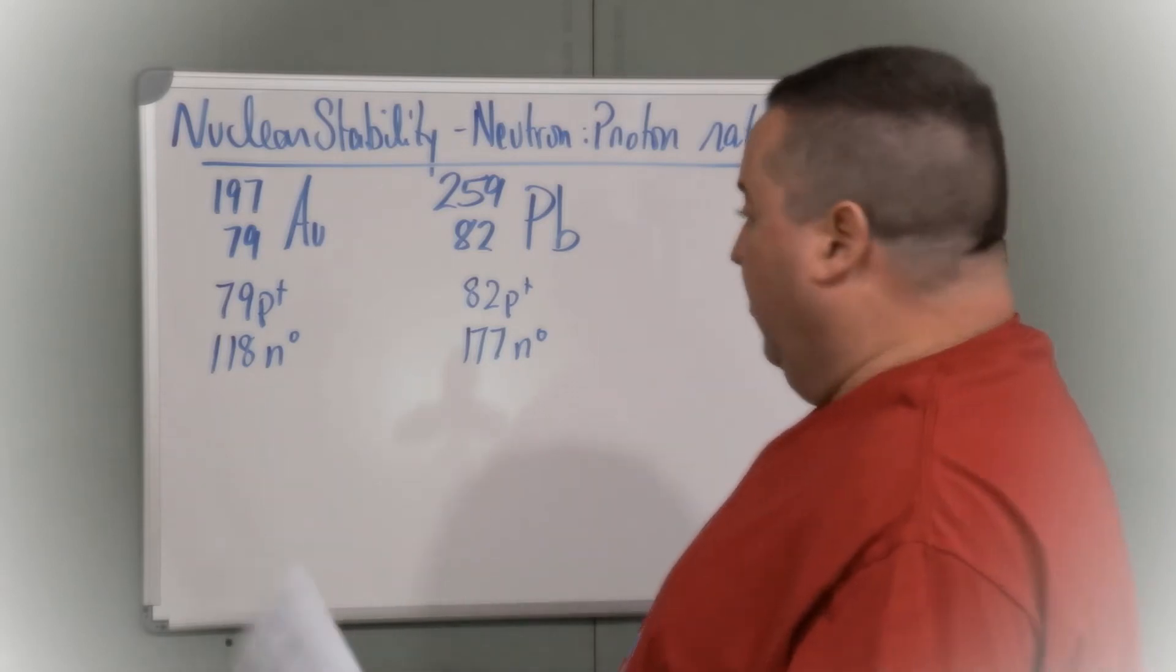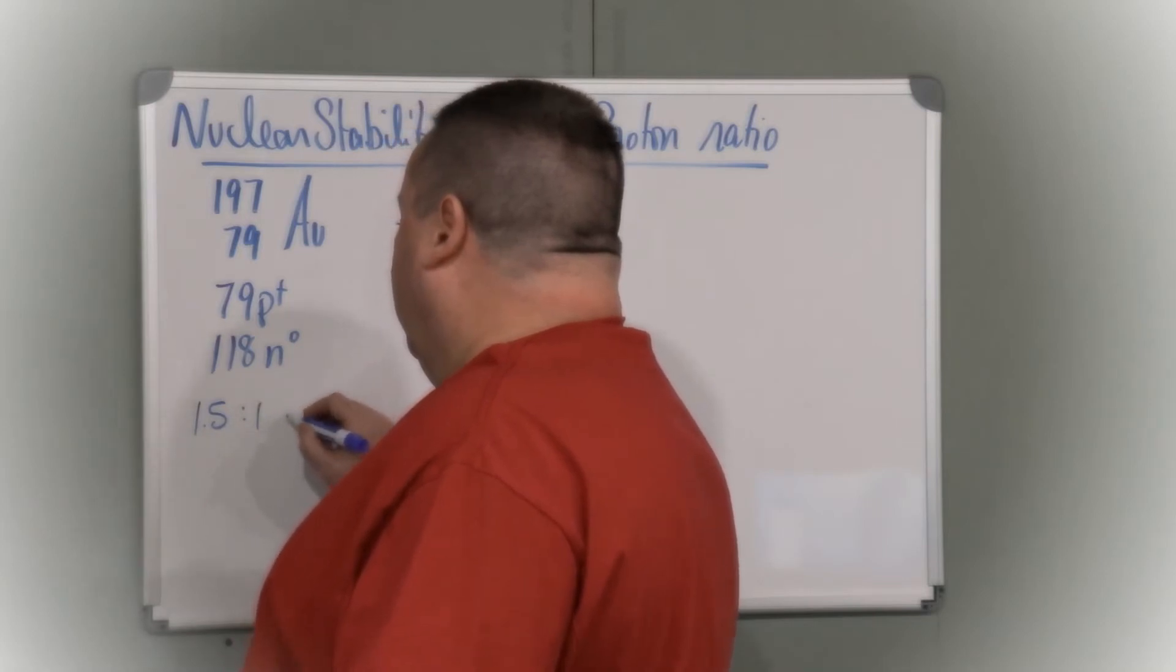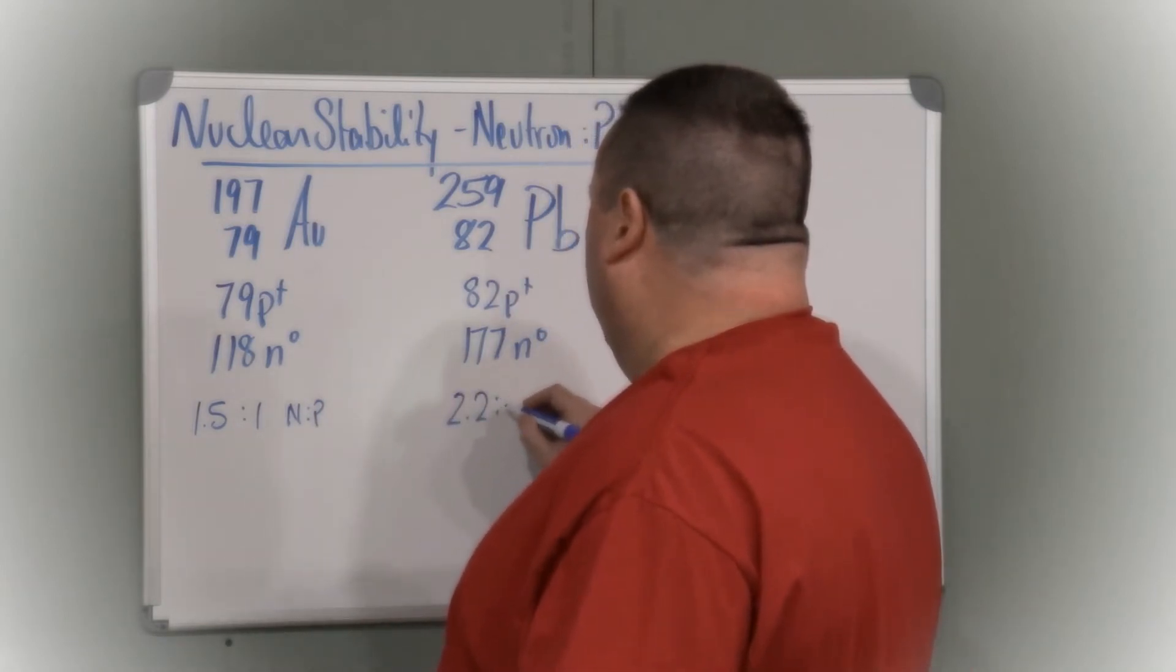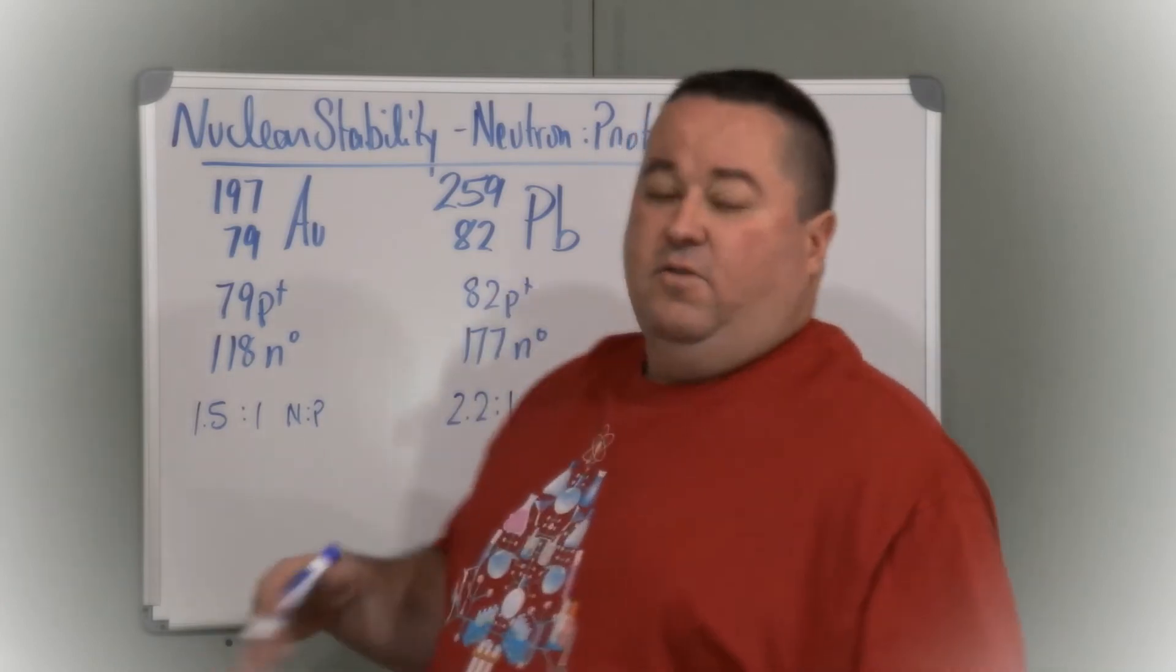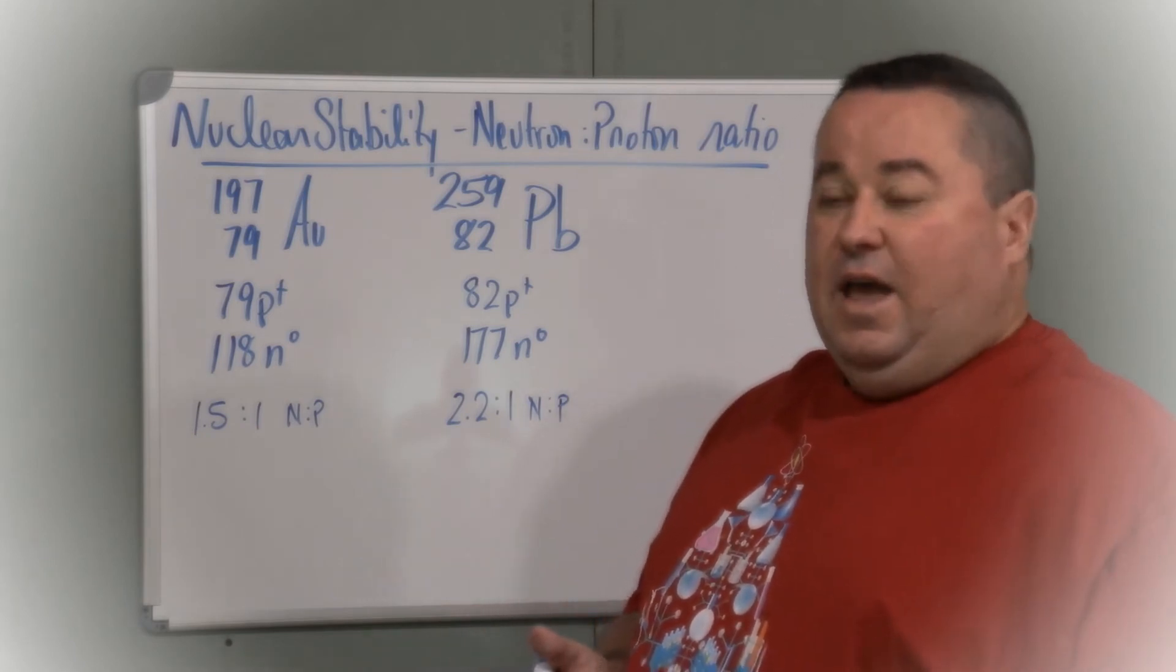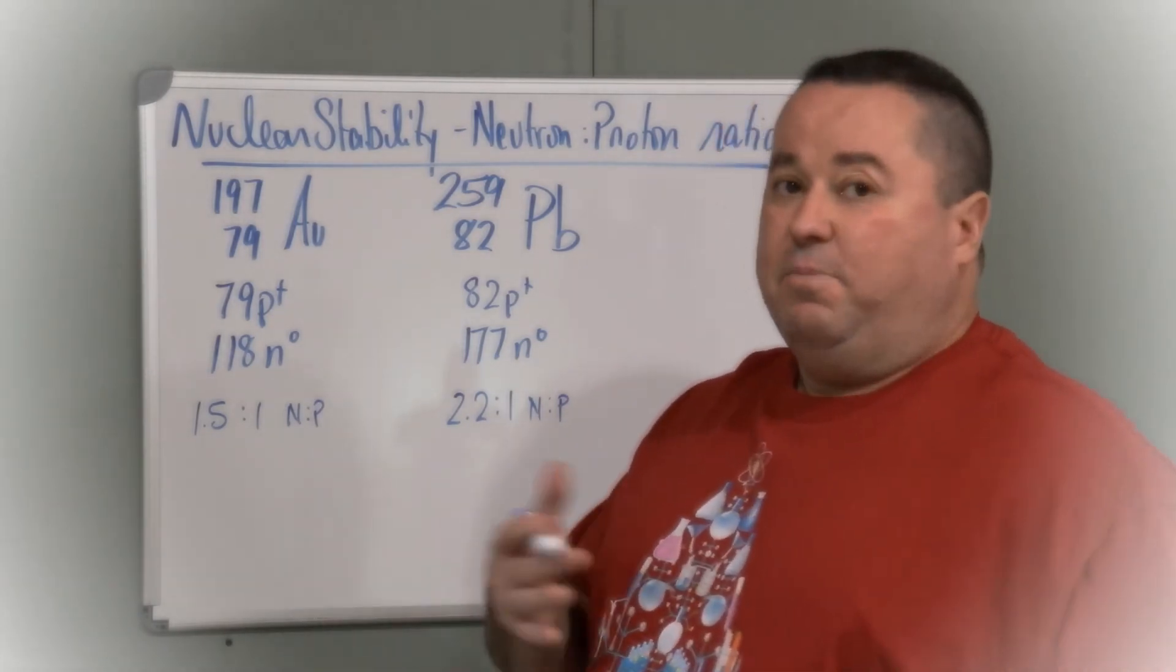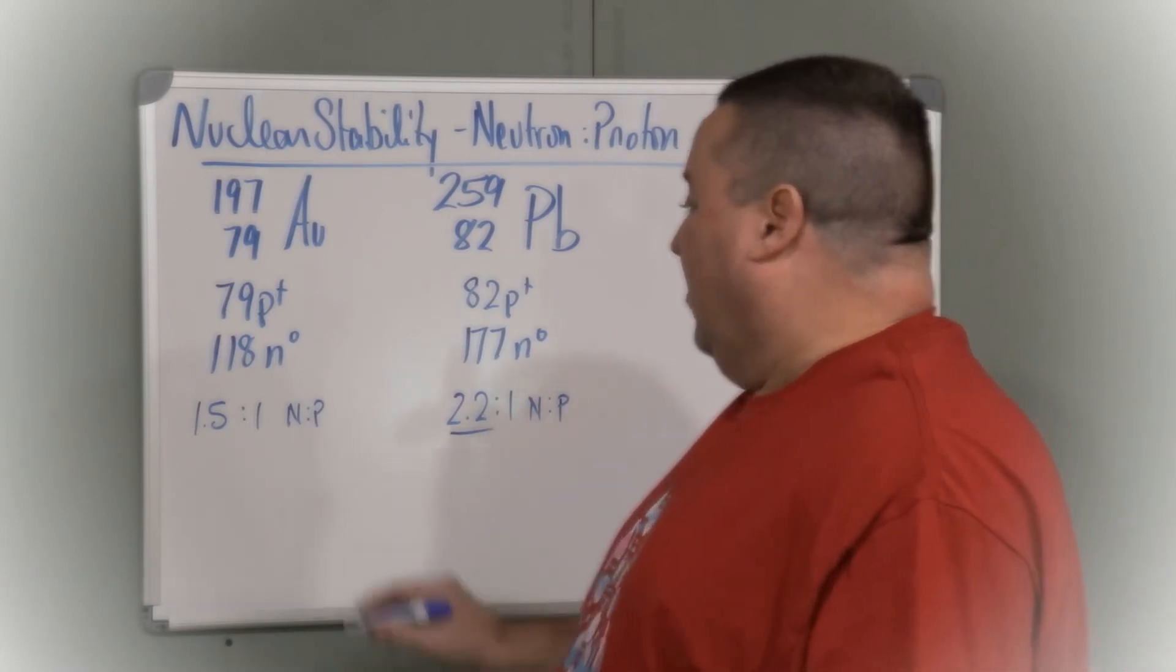So here we see a 1.5 to 1 neutron to proton ratio, and here it's about 2.2 to 1 neutrons to protons. Way too big. For the smallest elements in the periodic table, the ratio should be about 1 to 1. After about element 20, it starts to increase gradually. And for the largest elements of the periodic table, it gets up to the 1.5 to 1.6 to 1 ratio, but it never gets this high.